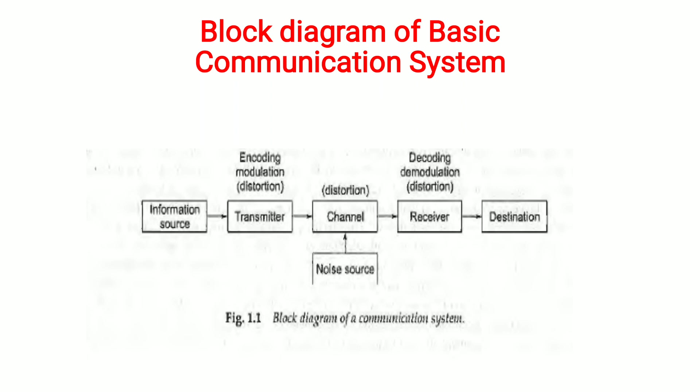We will now see a block diagram of a basic communication system. The first block is the information source. The information source contains information which is to be transmitted to the destination.